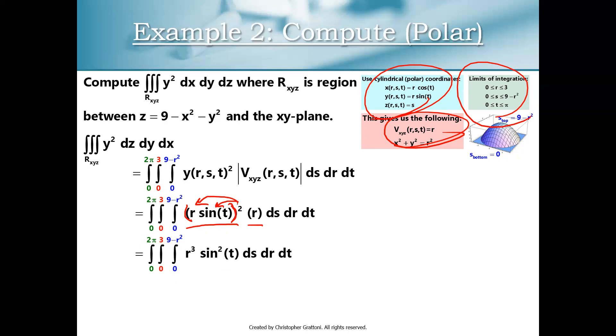And so from here on out, I think this is a triple integral that you guys can crunch the numbers on. And when you do so, you're going to get an answer of 243 pi over 4.